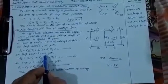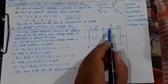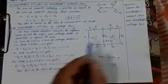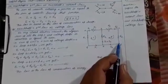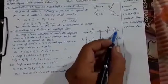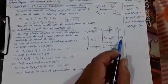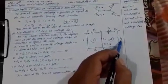Now solving the second loop B-C-D-E-B: moving from B to C through the battery from negative to positive terminal gives a negative EMF, E2. Moving from C to D gives a potential drop: V equals I2 times R2. Applying Kirchhoff's Voltage Law, the algebraic sum of all EMFs and voltage drops around this closed loop equals zero — giving us the second equation.